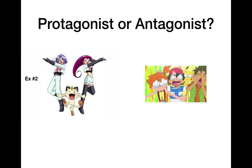Let's look at another example. Over on the left we have Team Rocket, and over on the right we have Ash Ketchum and Pikachu. Who is the protagonist? The main character, the focus of the story, is Ash Ketchum. He's trying to catch all the Pokémon and become the greatest Pokémon trainer of all time. Team Rocket opposes Ash and is constantly trying to steal his Pikachu — so they are the antagonists.